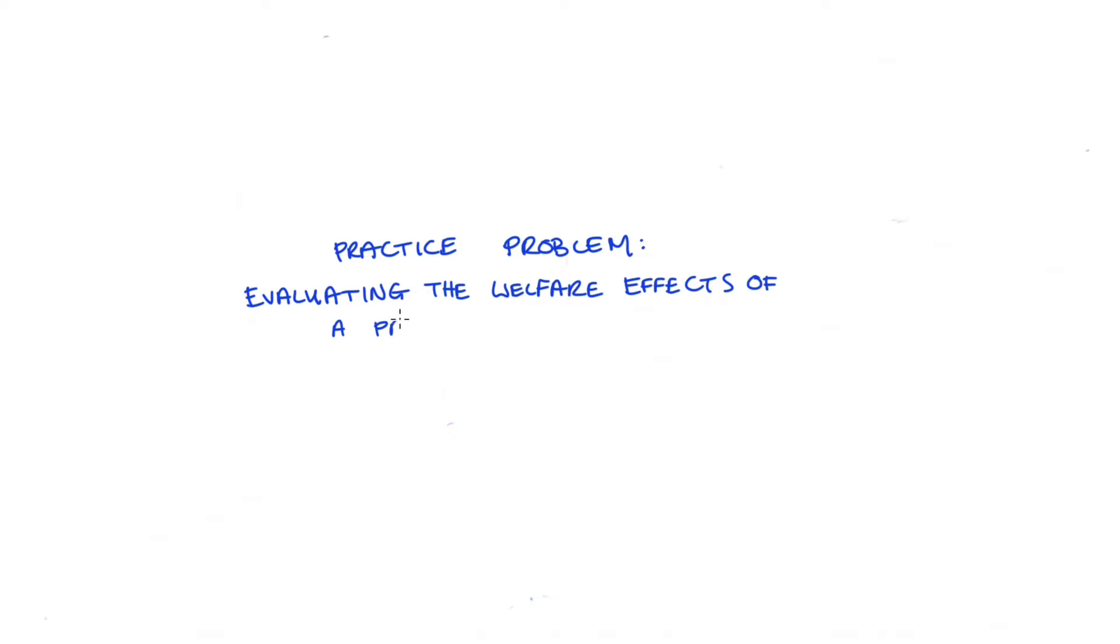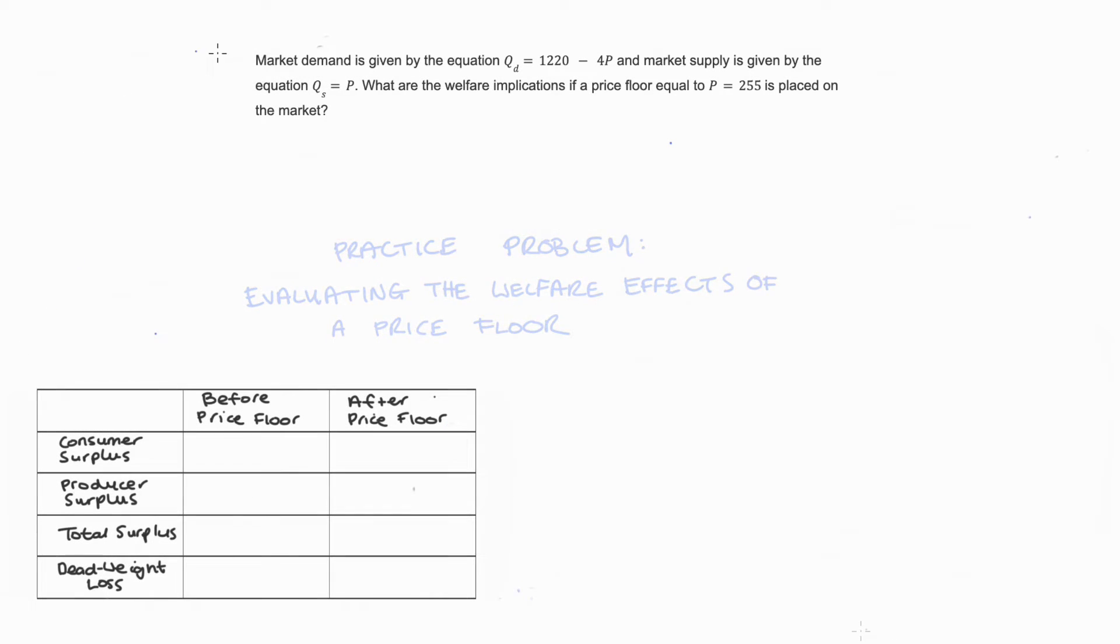Hey everyone, in this video I'm going to go through a practice problem which looks at evaluating the welfare effects of a price floor. So here's our question: market demand is given by the equation QD = 1220 - 4P and market supply is given by the equation QS = P. What are the welfare implications if a price floor equal to 255 is placed on the market?